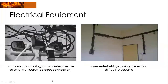We have also electrical equipment such as octopus connection or wiring, which can also cause fire. Then we have concealed wirings — they are covered and cannot be easily monitored because they are mounted in our walls. Once they are beaten or caught by pests or animals, we will not easily notice that there is something wrong already with our wiring.